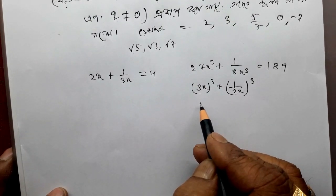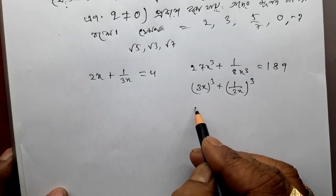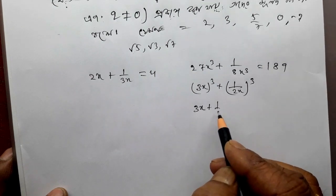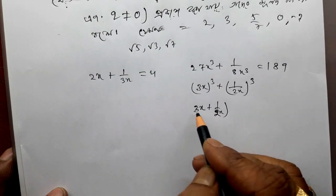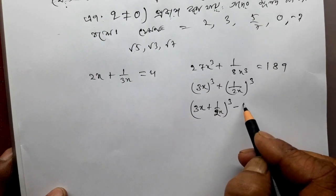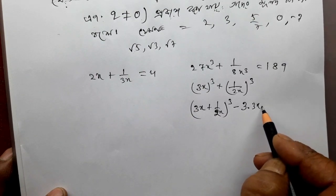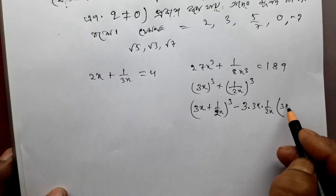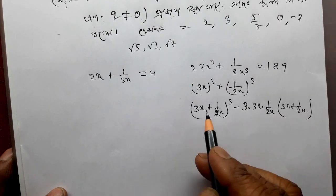a plus b whole cube. 1-9 formula. a cube plus b cube is the 1-9 formula, so a plus b whole cube minus 3ab. a means 3x, b means 1 by 2x, into a plus b, which is 3x plus 1 by 2x.